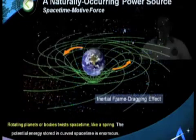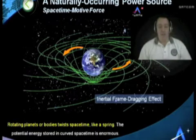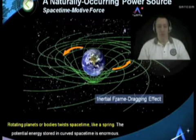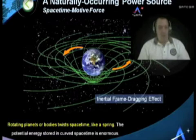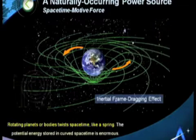For those who are not familiar with the term space-time motive force or curved space-time, let's show it quickly in a short description. In this example, you can see the Earth. Anytime matter appears in the fabric of space-time, we know it distorts space-time around that mass. Also, as Einstein's special theory of relativity predicted, and we proved almost 25 years ago, as the rotating body spins, it actually twists space-time around it like a spring.